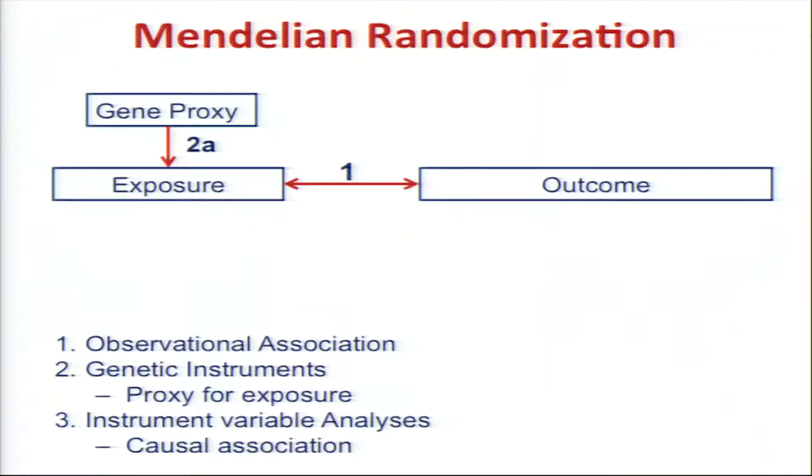For example, there is an exposure and outcome and the red arrow represents that there can be reverse causation — you don't know who comes when. The idea is that you take a genetic proxy of the exposure of interest and then directly relate it through instrumental variable regression analysis to see if there is a causal association of the exposure with an outcome of interest. If you are interested in knowing the direction of causality, you can also do it in the reverse direction, which is known as the bidirectional Mendelian randomization approach.